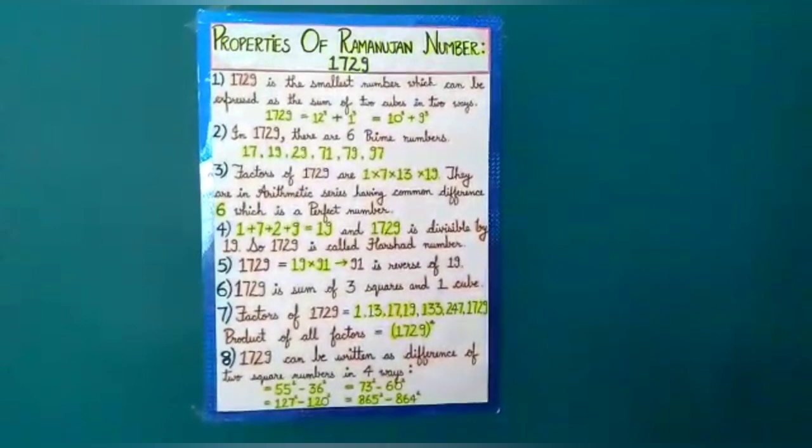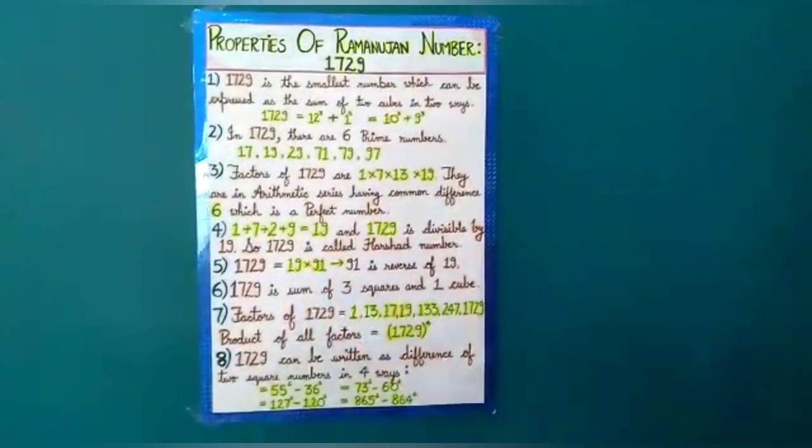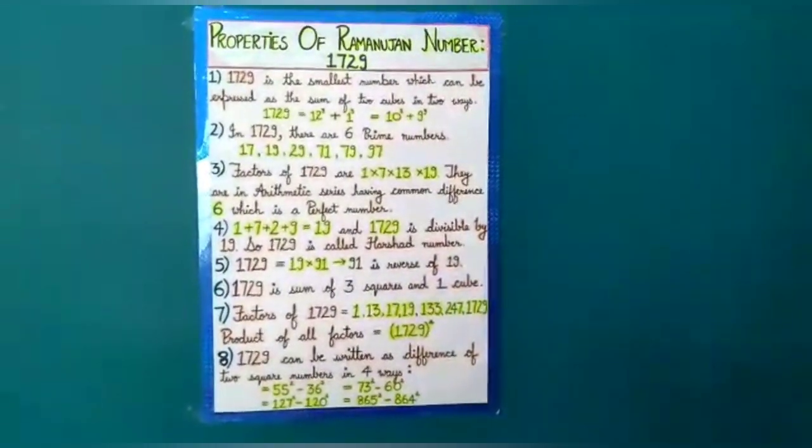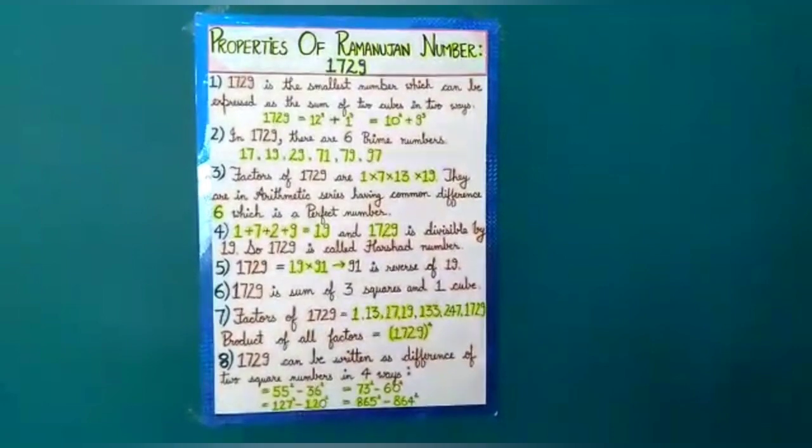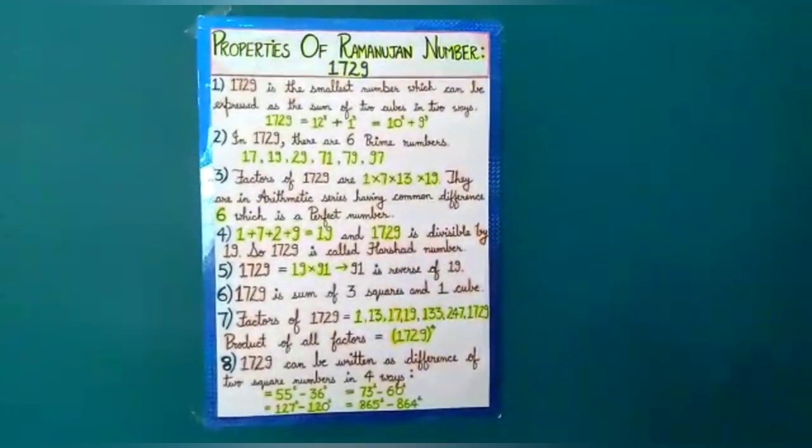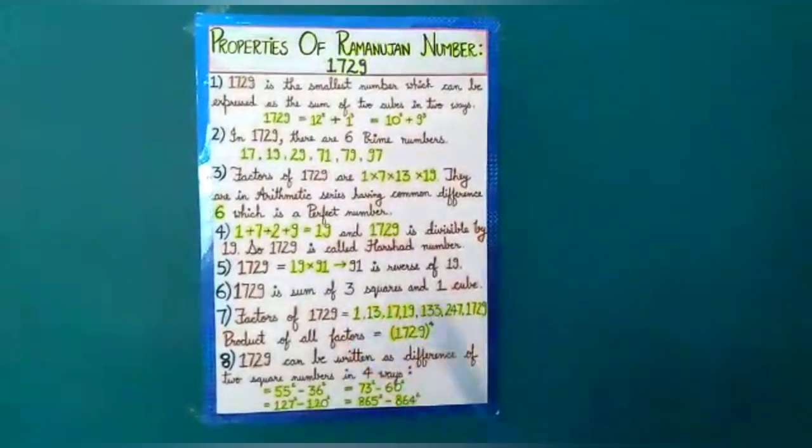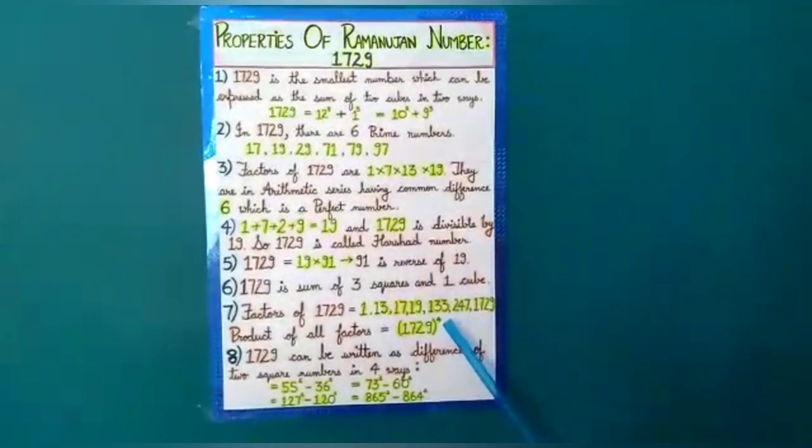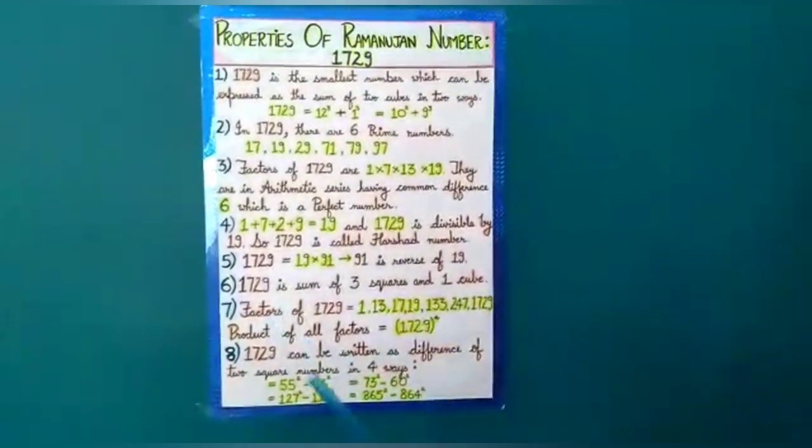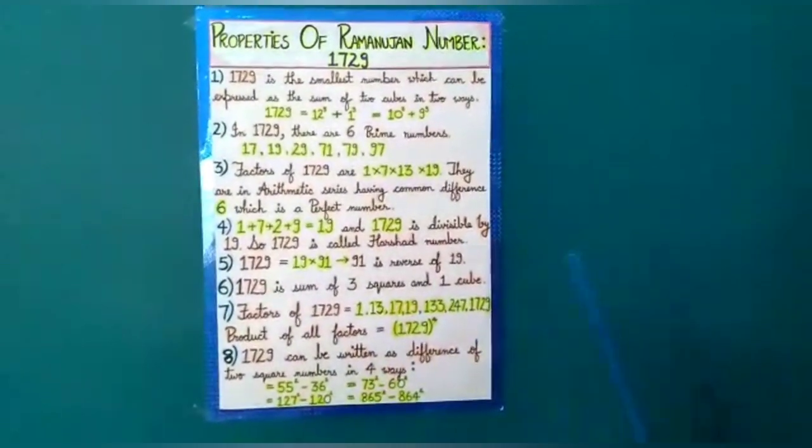Number five is 1729 is 19 into 91 and we all know that 91 is divisible by 19 and vice versa. Number six is 1729 is sum of 3 squares and 1 cube. Number seven is factors of 1729 are 1, 7, 13, 19, 133, 247 and 1729 and the product of all factors is 1729 to the power 4.